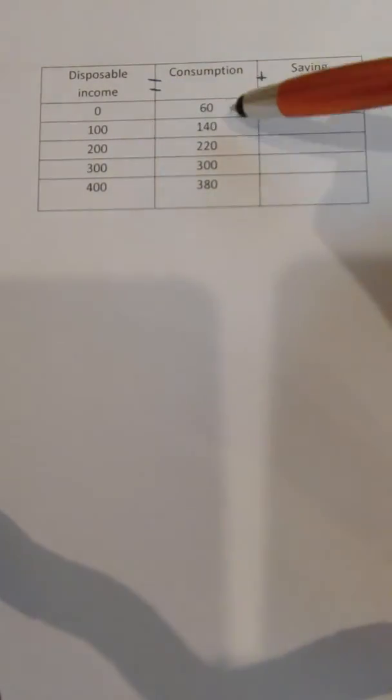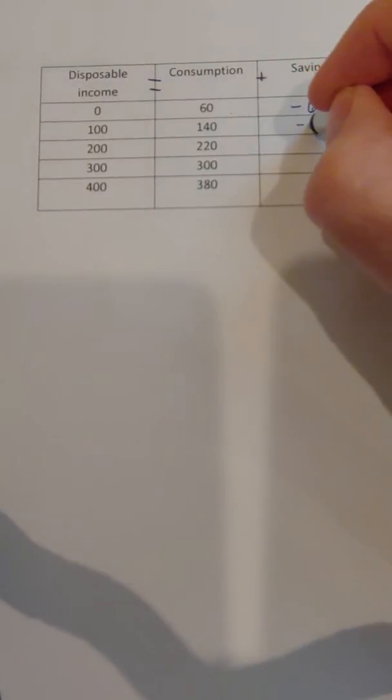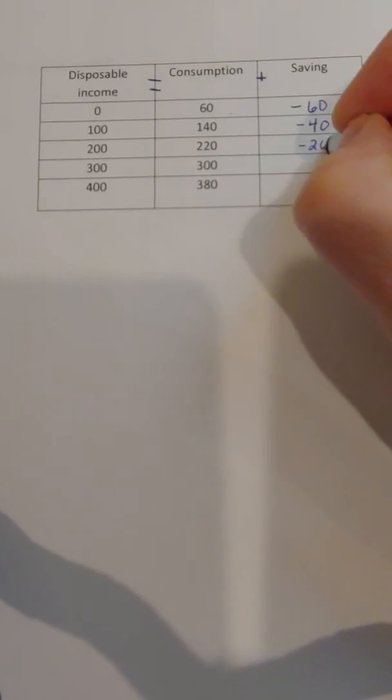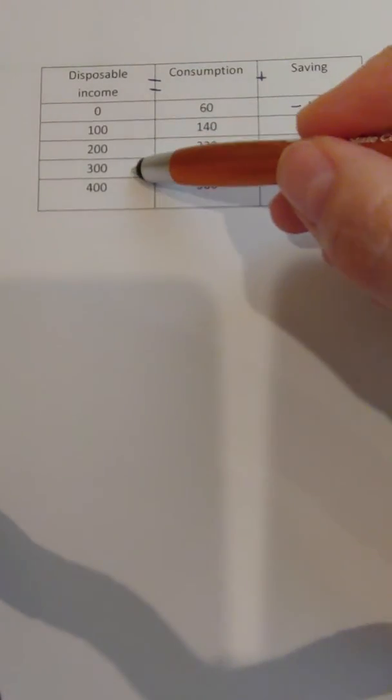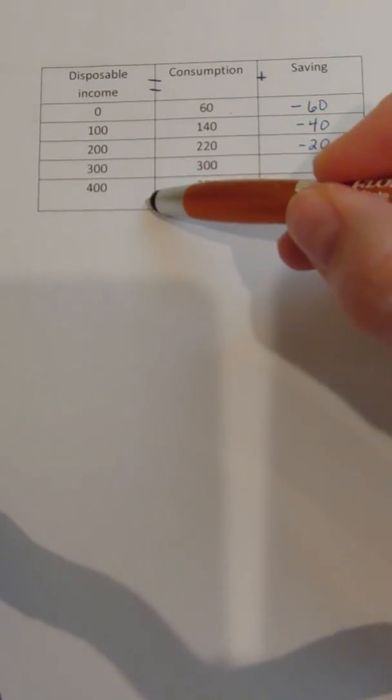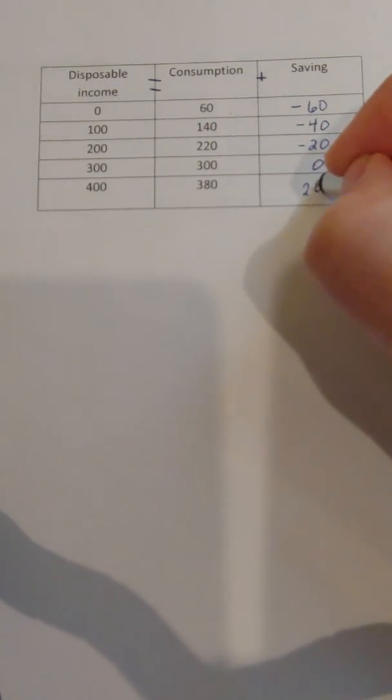If disposable income is 100 and consumption is 140, then saving is going to be negative 40. If disposable income is 200 and consumption is 220, saving is negative 20. If disposable income is 300 and consumption is 300, we have zero saving. And if disposable income is 400 and consumption is 380, then we finally have positive saving.